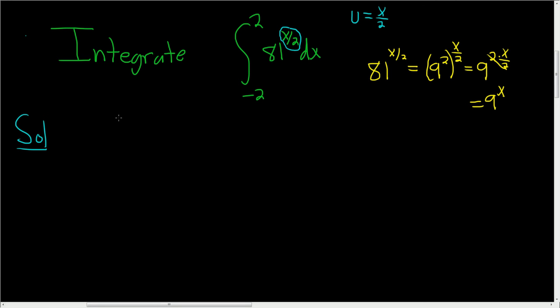This is actually the definite integral from negative 2 to 2 of 9 to the x dx. Because 81 to the x over 2 can be written as 9 to the x. And now we can go ahead and integrate.